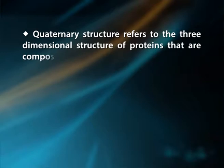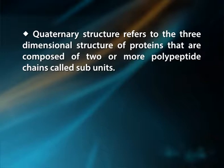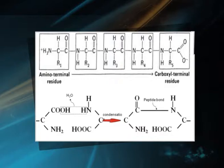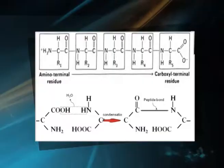The primary protein structure consists of the sequence of amino acids that makes up the polypeptide chain, where each amino acid residue is linked by peptide bonds. Two amino acids can combine together to form a dipeptide by a condensation reaction between the carboxyl group of one amino acid and the amino group of the other amino acid. The resulting bond linking the two amino acids is called a peptide bond. If one more amino acid is attached via peptide bond, it forms a tripeptide. Four amino acids give a tetrapeptide, and so on. If more than ten amino acids are joined through peptide bonds, it forms a polypeptide.